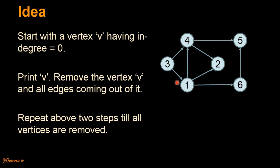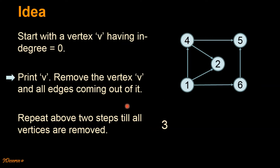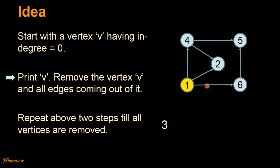Let's simulate these steps for this particular graph. First step: we start with vertex v having in-degree of 0, that would be vertex 3. Second step: we print vertex 3 and remove it and all edges coming out of it, so our graph will look like this. Then we repeat these two steps. We jump back to step 1 and find vertex v with in-degree of 0. In this reduced graph, vertex 1 now has in-degree of 0. In the second step, we print vertex 1 and remove its three edges. So the topological sorted order and reduced graph will look like this.